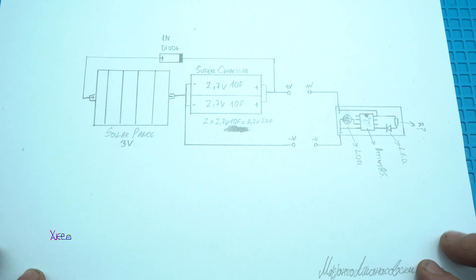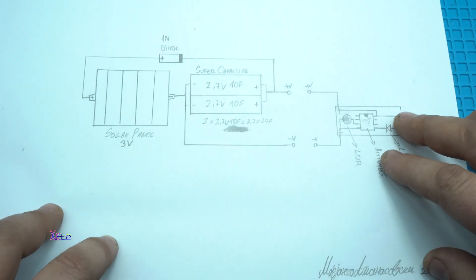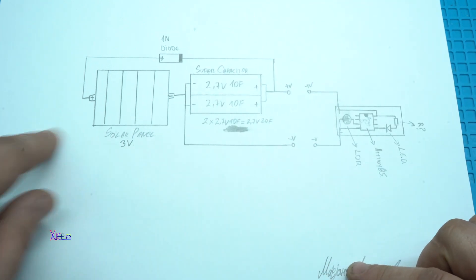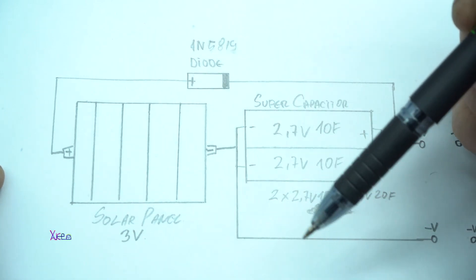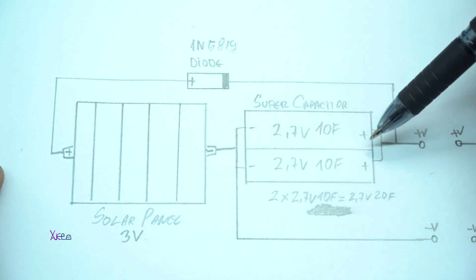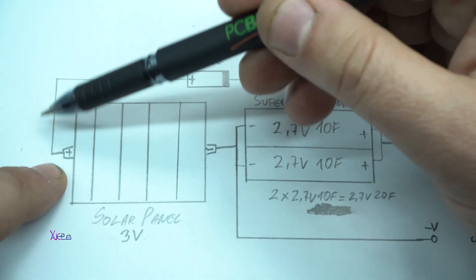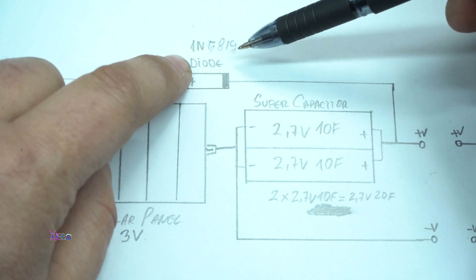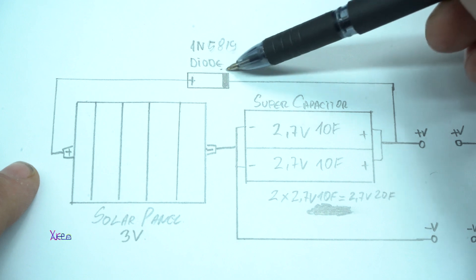Here it is, the 3S super solar system. The solar panel gives positive and negative electricity. The negative goes directly to the super capacitor negative terminal, and the positive wire from the solar panel goes to the diode. In this case, I'm using Schottky diode 1N5819, the best diode for lowest voltage drop.